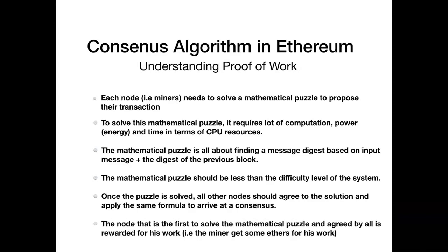The node that is first to solve the mathematical puzzle and eventually verified and agreed by all the other nodes is rewarded for its work. In the Ethereum network, this would imply a node being rewarded with some ethers for solving the puzzle.